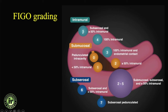The subserosal fibroid is grade 5, and when partly subserosal and partly intramural it remains grade 5. A very large fibroid touching the endometrial cavity and indenting the serosa is classified as 2–5. Grade 7 is pedunculated subserosal. These can be confusing, and MRI helps determine the organ of origin — distinguishing broad ligament fibroids or wandering fibroids from ovarian lesions.